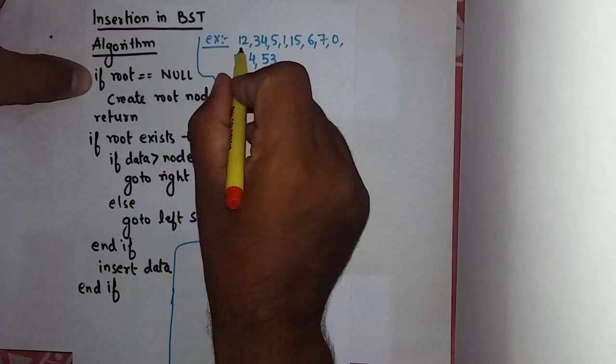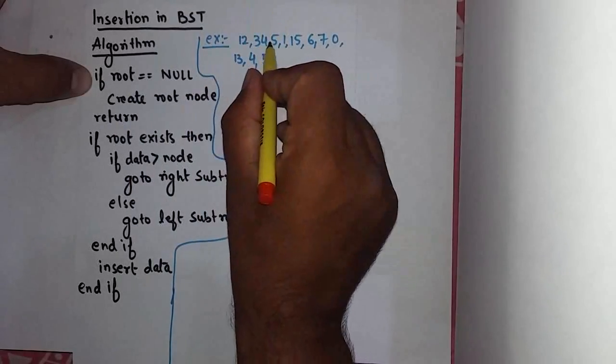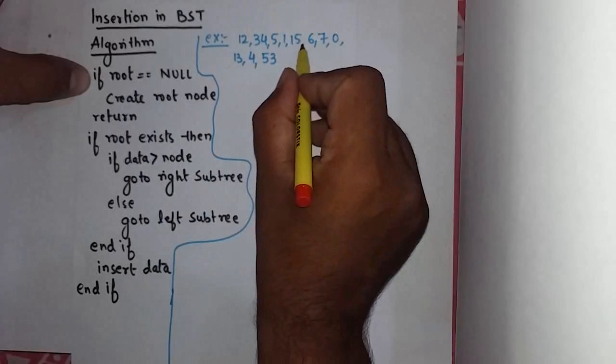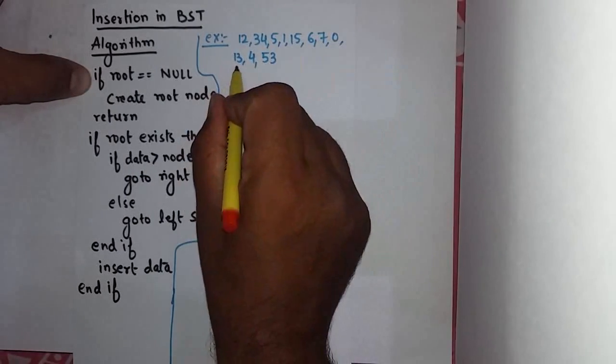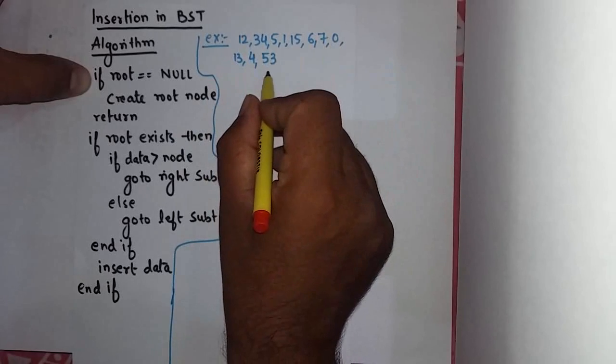Which means I have some elements like 12, 34, 5, 1, 15, 6, 7, 0, 13, 4, and 53.